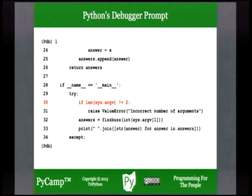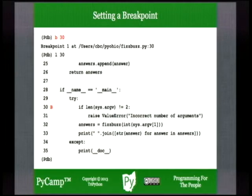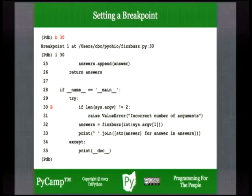We know that's where the problem occurred before. It would be nice if we didn't have to single-step and repeat all that just to get to this point. We're going to set a breakpoint — let the debugger run all the statements in the program until it reaches a particular place specified by line number. The 'b' debugger command will set a breakpoint. Let's set it at line 30 if you're in Python 3.